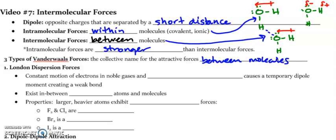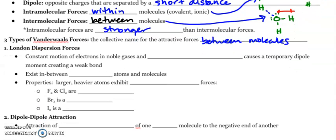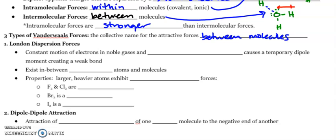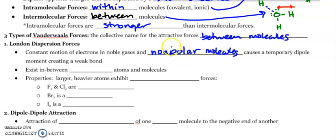The first type is what we call a London dispersion force. London dispersion forces are due to the constant motion of electrons in noble gases and nonpolar molecules, and nonpolar is the key, which causes what we call a temporary dipole moment.